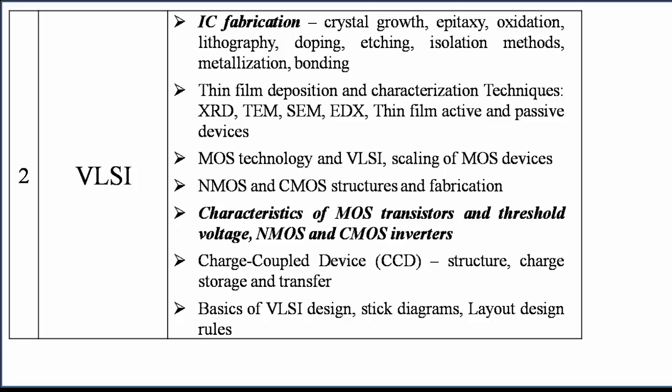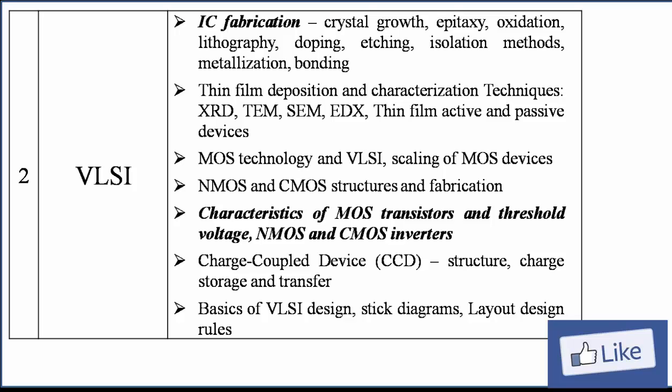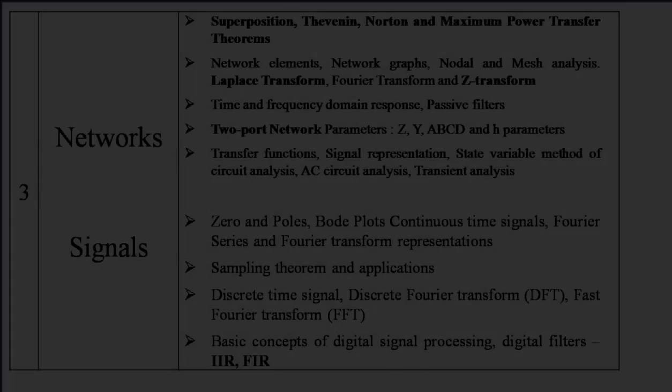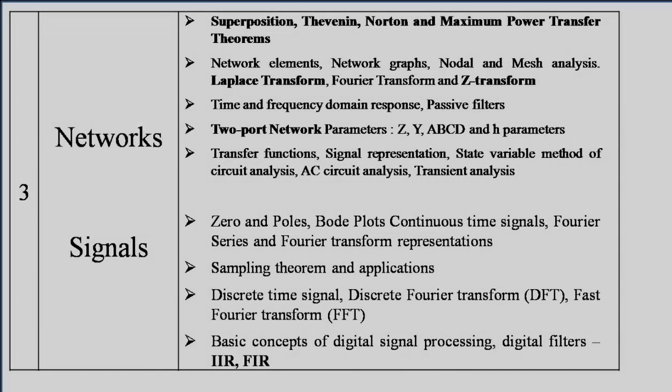In VLSI, fabrication steps are very very important. In MOSFETs, focus more on CMOS — it is made up of NMOS and PMOS. What is the difference between NMOS and PMOS? Which one passes strong logic one or strong logic zero? What are transmission gates, pass transistors, charge coupled devices, and layouts?